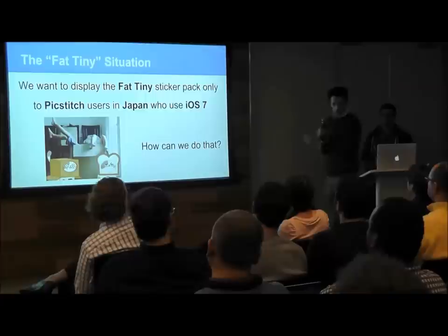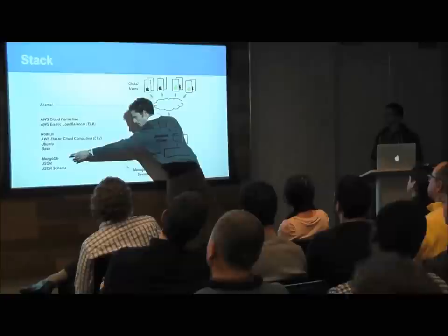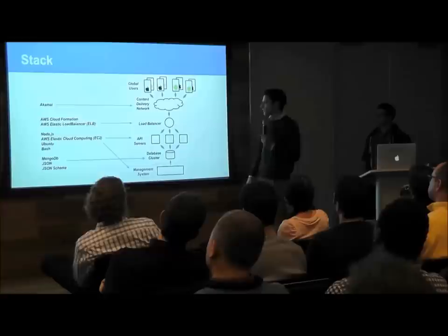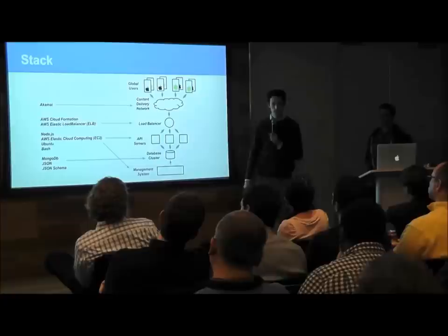Here's the stack we used for version two. We have 50 million monthly active users on different devices who want to figure out what content is available for download. They make a call to our system, initially hitting a content delivery network — an additional caching layer provided by Akamai — which then filters through to a load balancer that distributes load across our servers.